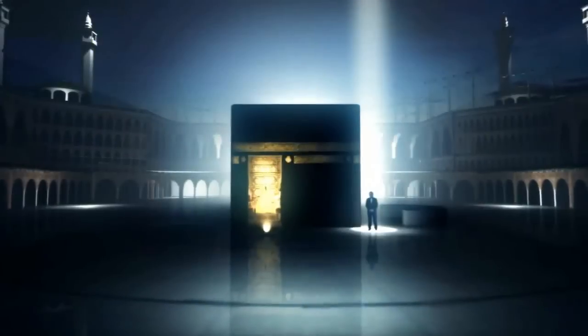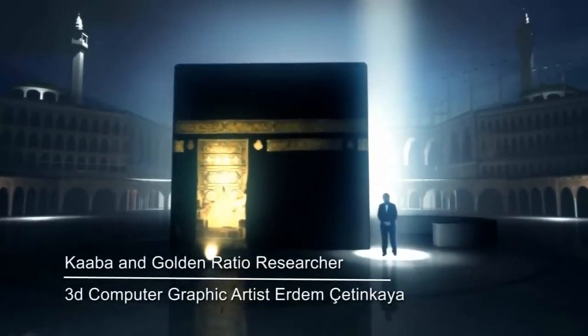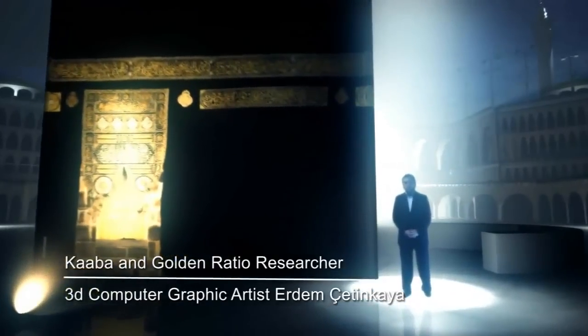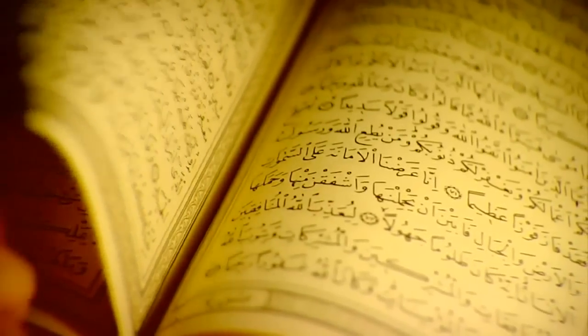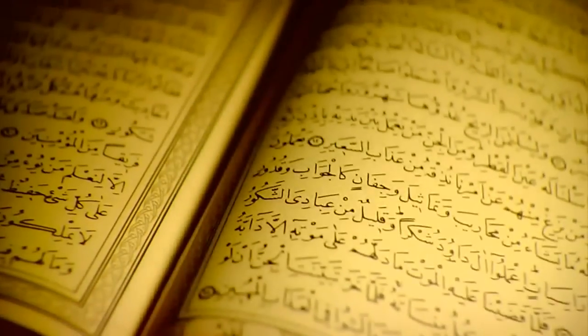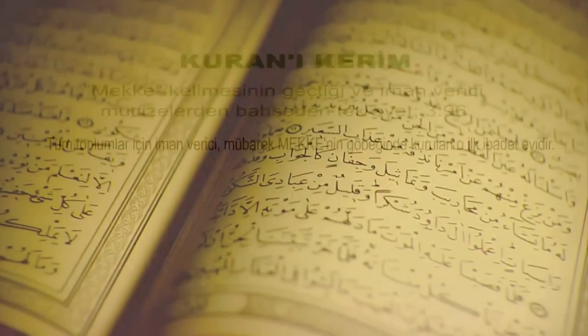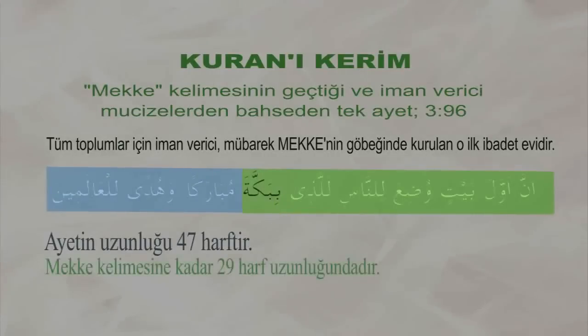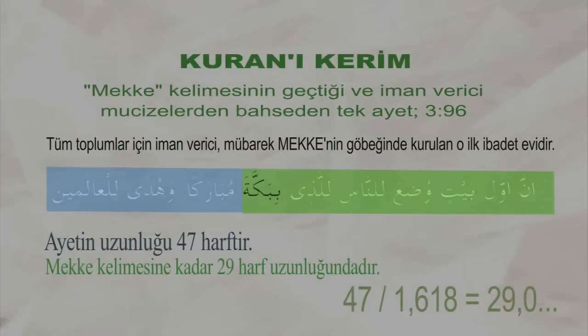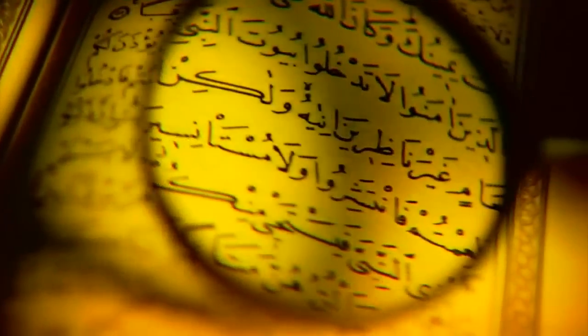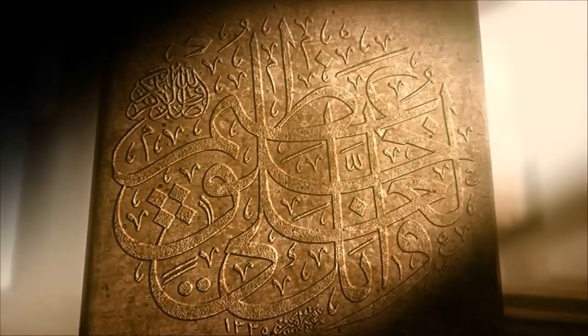The golden mean miracle in the Mecca verse of the Quran. There is one unique verse in the Quran that includes the word Mecca and an expression that tells there are clear evidences within the city which will give belief to humanity. The relation between the city of Mecca and the golden mean is clearly engraved in the Ali Imran Surah, 96th verse. The total number of all letters of this verse is 47. Calculating the golden mean of the letter total, we find that 47 divided by 1.618 equals 29. There are 29 letters from the beginning of the verse until the word Mecca — just like it is in the world map. If only one single word or letter was missing, this ratio could never be constituted.